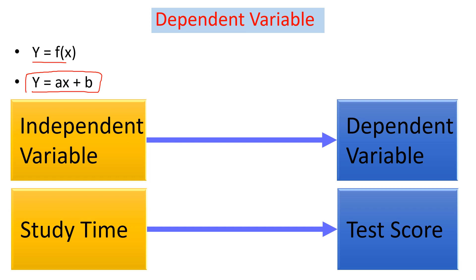When we put this as a conceptual framework, we have to put it like this picture: the independent variable is placed on the left with an arrow pointing to the right towards the dependent variable. So study time is the independent variable and the test score is the dependent variable.